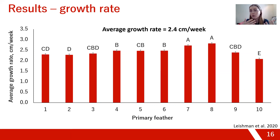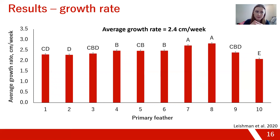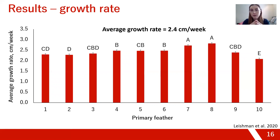The biggest difference between feathers is about one centimeter per week, so it is not drastically different. Overall, the average growth rate across all 10 feathers was about 2.4 centimeters per week — they grow in pretty fast.